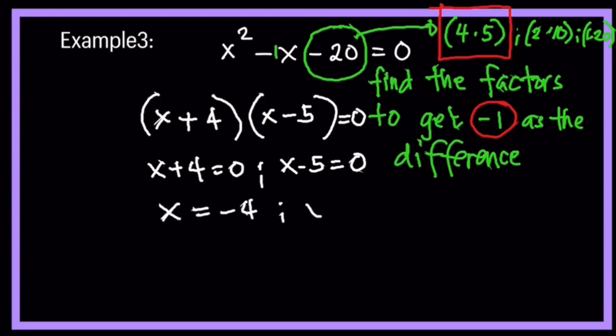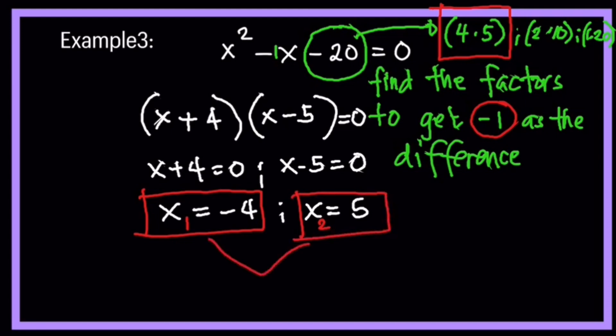x plus 4 is equal to 0, and then x minus 5 is equal to 0. Transpose 4 on the other side, that becomes negative, and the other value is positive. So these are the two solutions of the equation, of the given equation: minus 4 or negative 4, and 5. That's for example number 3.